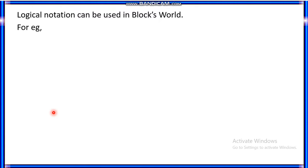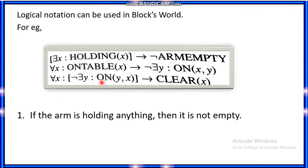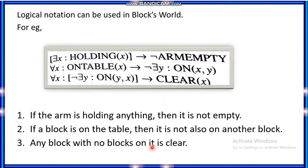The logical notation can be used in this form: for all x, holding(x) implies negation of armEmpty; onTable(x) implies negation of on(y, x) for any y. This means: if the arm is holding anything then it is not empty; if block A is on the table then it is not on another block; and any block with no block on top of it is clear — clear(x) means there is no block on its surface.